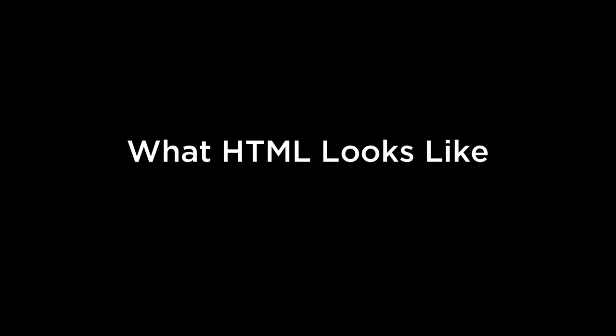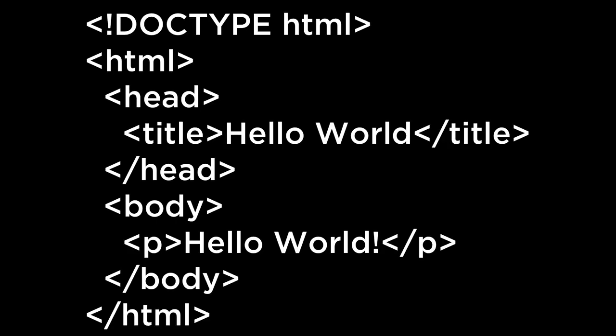What HTML looks like. HTML looks like this. You have the doc type, you have HTML, head, title, the closing tag for head, the body, the paragraph, the hello world content, the closing tag for the paragraph, the closing tag for the body, and the closing tag for the HTML. As you can see, the HTML tags are wrapped around the text content of the document. So any type of document that we find on the web is going to look very much the same.